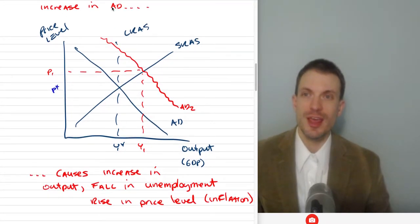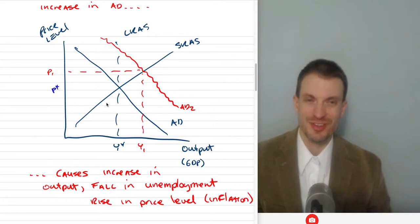If we get an increase in aggregate demand, suppose there's a decrease in taxes that would increase consumption, maybe increase investment. Suppose there's a decrease in interest rates that would increase investment. Suppose government spending increased. Any of those things could cause aggregate demand to shift to the right. We'd get higher output, higher price level. This increase in price level is indicative of inflation. This increase in output means we need more workers to produce those things. We get a fall in unemployment.